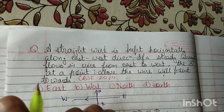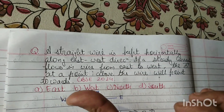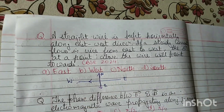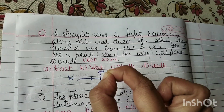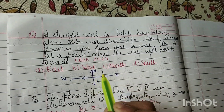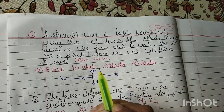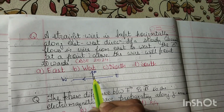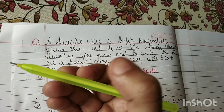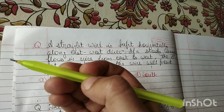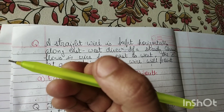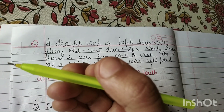The wire is going east to west. If a current is going east, look — there is a point above the wire. Just above the wire. If this wire is here, there will be a point above this line. Therefore, we will find the direction of the magnetic field.